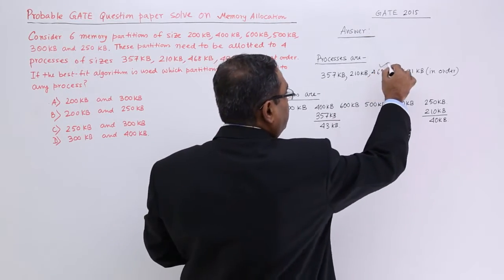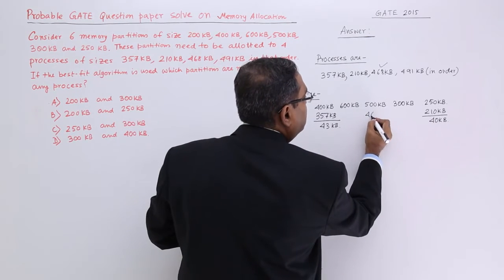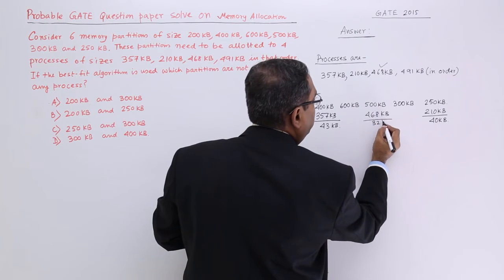Now we are going for this 468. 468 should be allocated here. It is 32 KB.